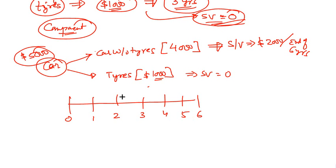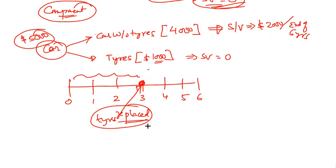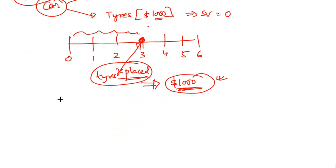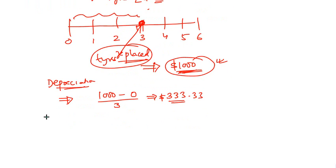Over the timeline from zero to six, the tire lasts only three years, so the tires have to be replaced at year three — you buy a new set of tires. Assuming the tire cost does not change, the new tires still cost $1,000 after three years. The depreciation for the tire: cost $1,000, salvage value zero, life of three years, so depreciation of tire = $333.33 per year.